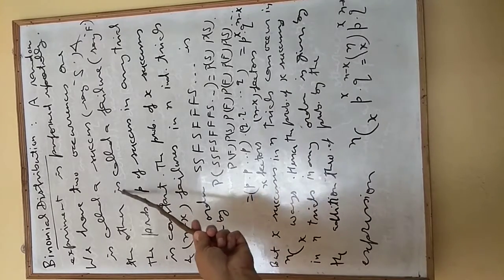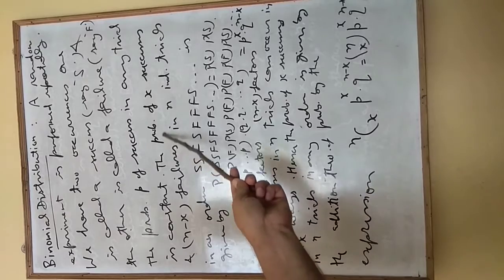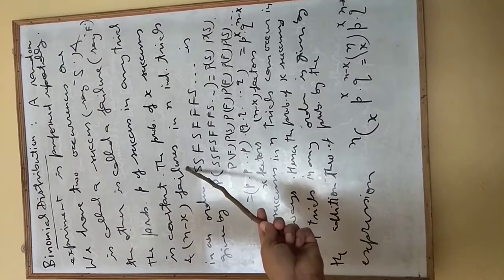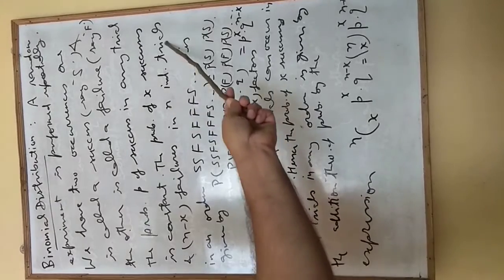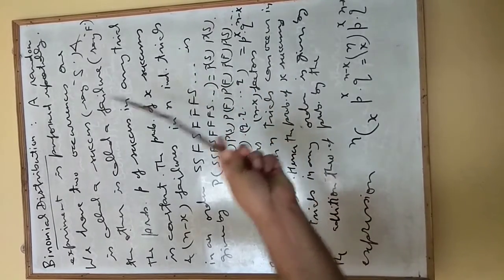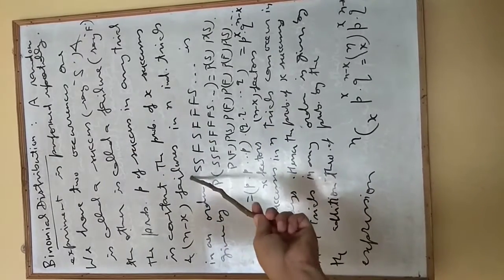So the probability of x successes and n minus x failures in n independent trials. Since the total number of independent trials is n, therefore if x successes, then n minus x will be failures.